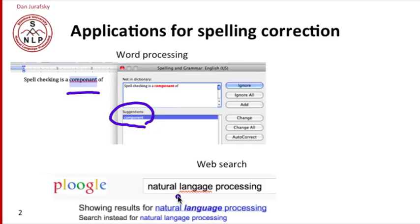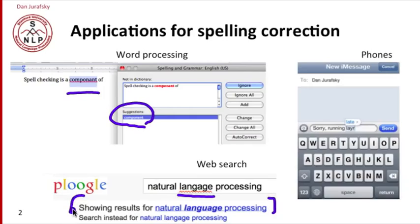Modern search engines will not only flag an error — so 'language' spelled without a U here — but give you the results as if you had spelled the word correctly. And modern phones additionally will automatically find misspelled words. Here I typed L-A-Y-R and it replaced it automatically, or suggests a replacement with 'late'.